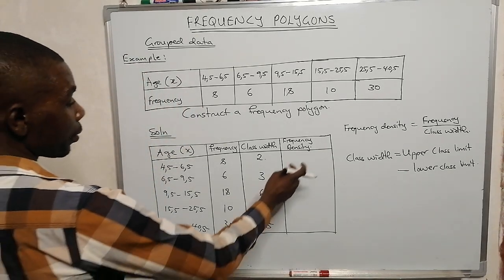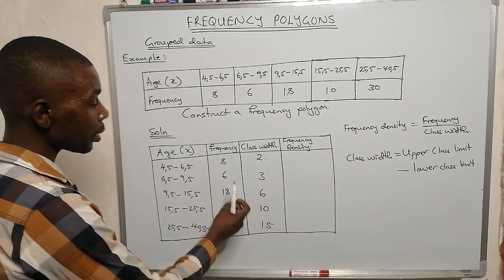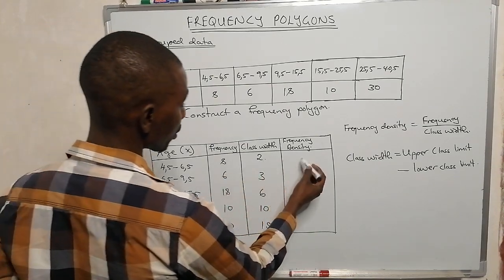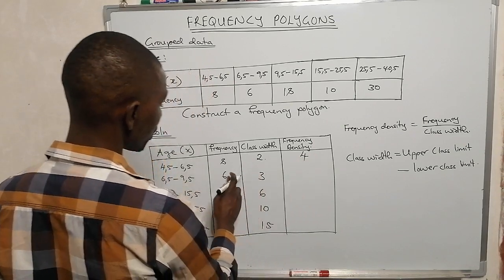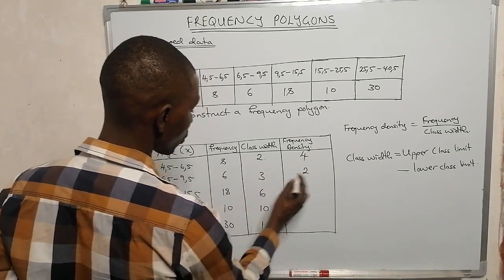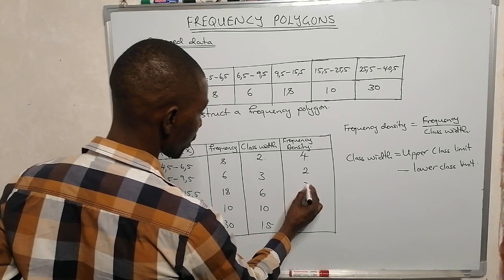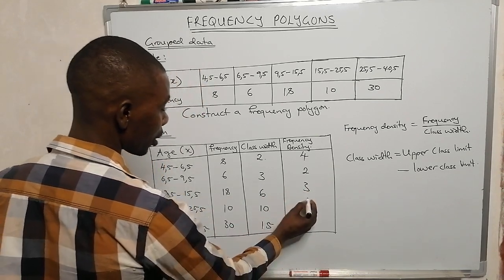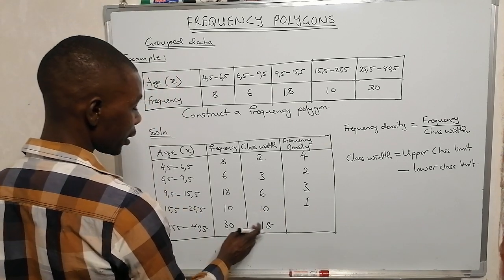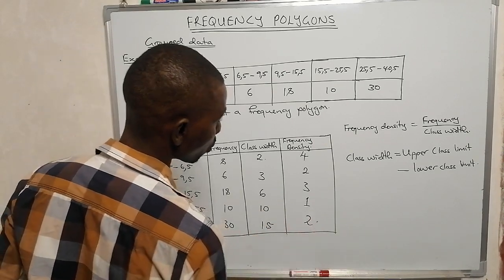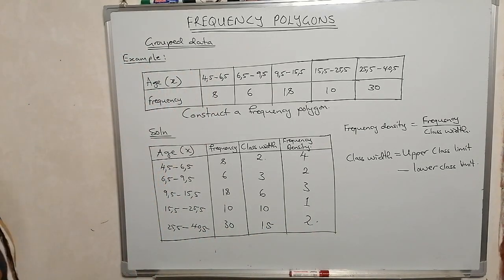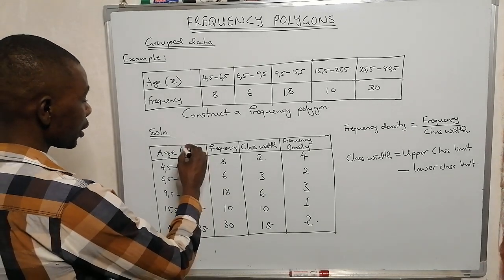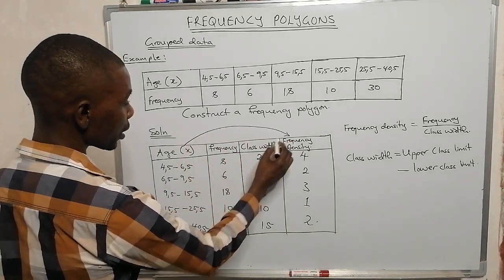Now we find frequency density by dividing frequency by class width: 8 ÷ 2 = 4; 6 ÷ 3 = 2; 18 ÷ 6 = 3; 10 ÷ 10 = 1; and 30 ÷ 15 = 2. Now we construct the histogram plotting age against frequency density.